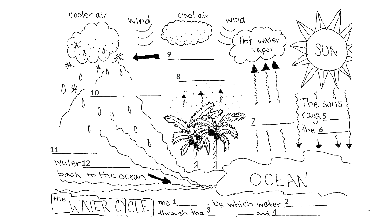The water cycle is the process by which water moves through the Earth and atmosphere. The sun's rays heat the ocean, causing water to evaporate. Plants release water from their leaves through transpiration. Water molecules bunch together during condensation, then flow from the clouds through precipitation. Then the water, called runoff, flows back to the ocean.